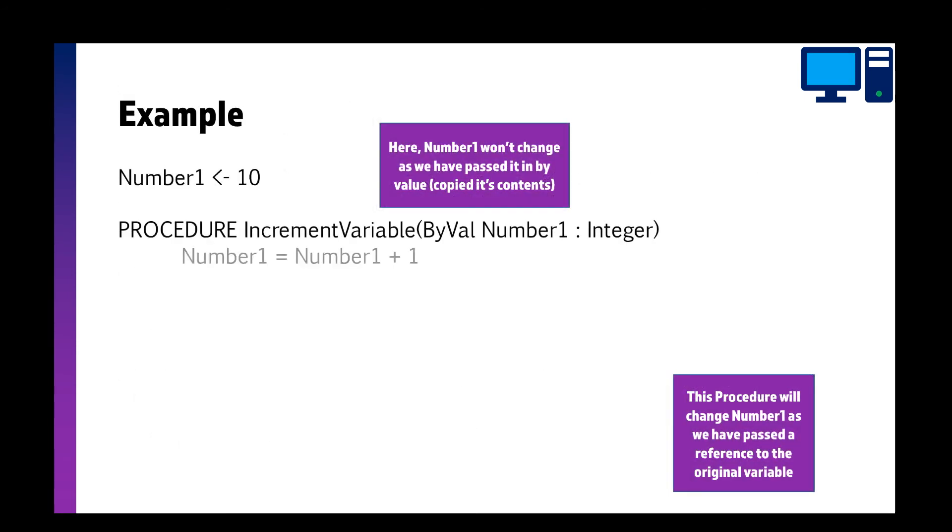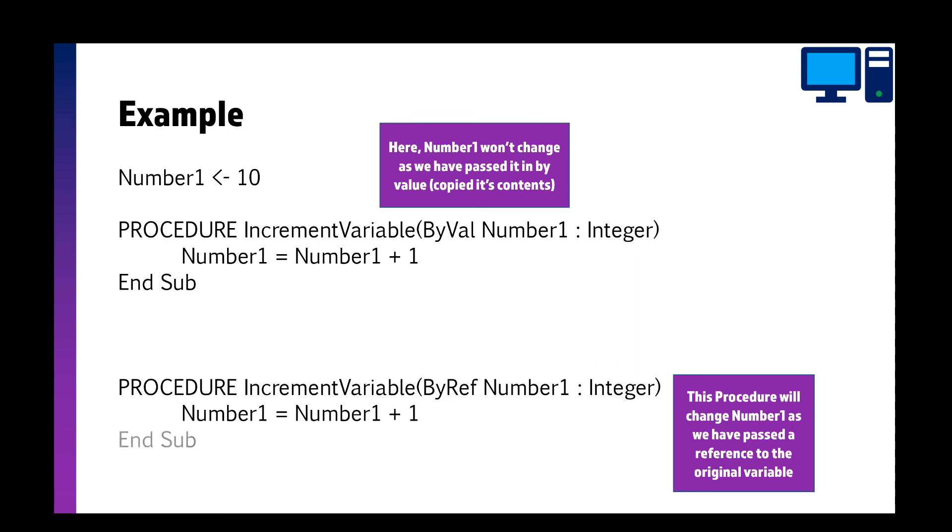So here's some examples. In the first example, I've got a procedure which is going to increment the variable by value. So it does number 1 equals number plus 1. Now, this original number 1 here would actually change because we've done it by value. So we just copy this 10 and put it in there, but we're not actually changing this number 1. We're changing this number 1 within this procedure.